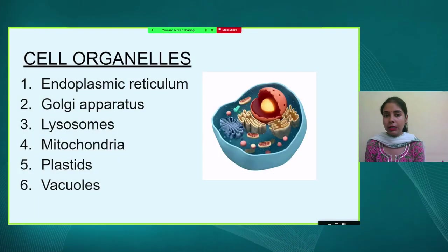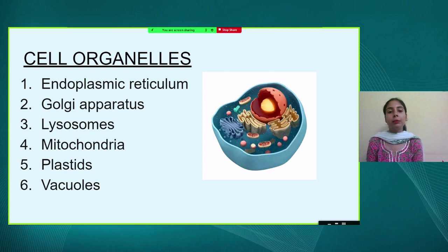Let's get back to today's session. We are going to discuss Class 9 Science, Chapter 5 — Fundamental Unit of Life — specifically cell organelles. We will discuss six cell organelles: endoplasmic reticulum, Golgi apparatus, lysosomes, mitochondria, plastids, and vacuoles. Cells are membrane-bound structures, and since the cell performs numerous functions in the body, different cell organelles are needed to separate and carry out these functions.